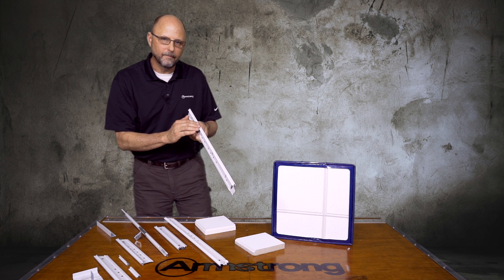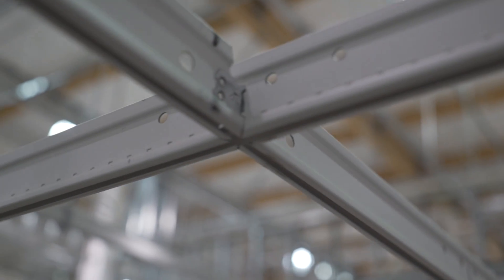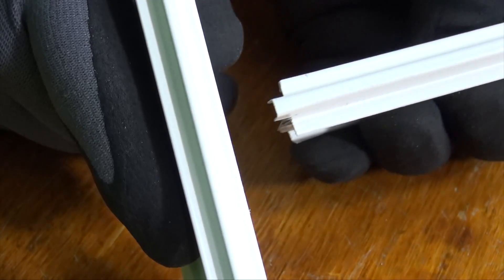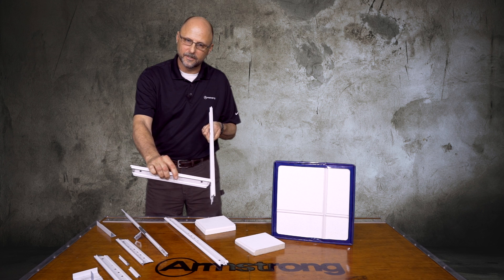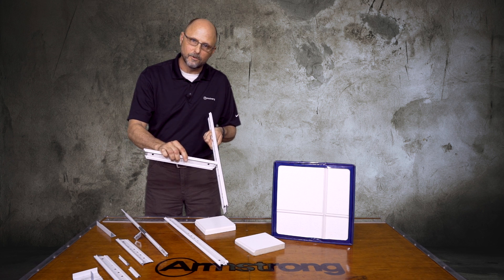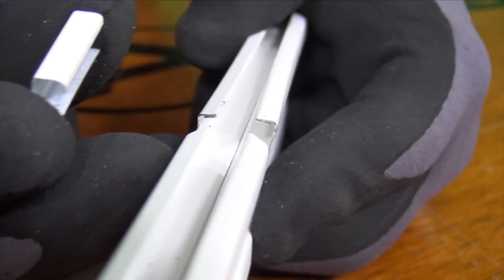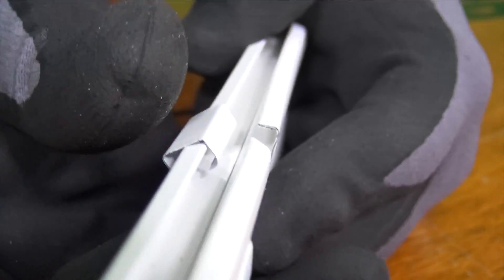With the Interlude main runner, you'll notice there are no miter notches like you would find with a Silhouette bolt slot type grid system. This means you have an unlimited amount of cross T to main T intersections. I can stab my cross T at any location, which makes this very nice for linear recessed light fixtures, and I don't have to contend with open or unused miter notches.